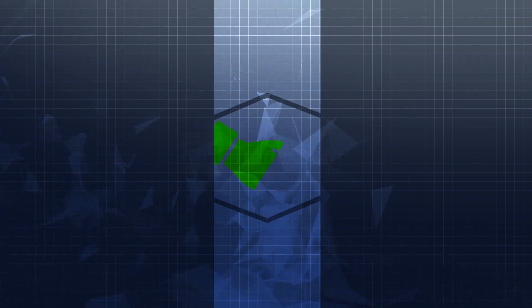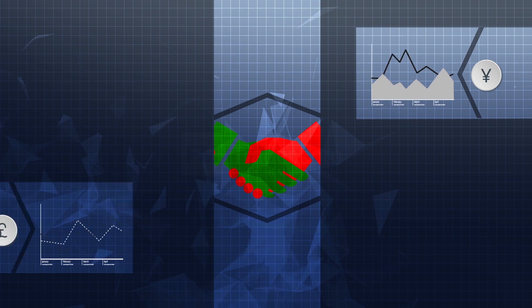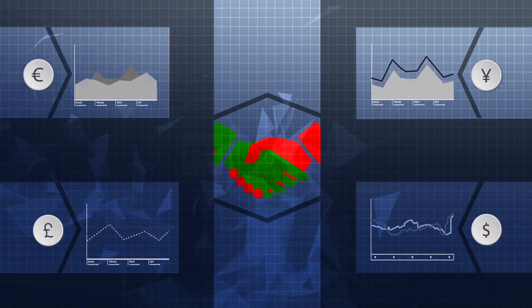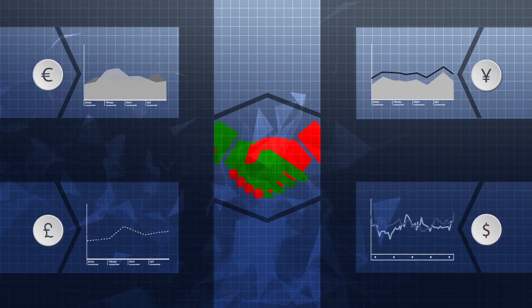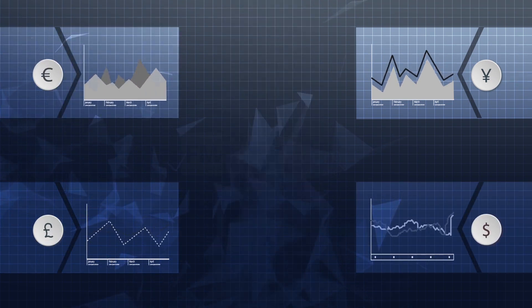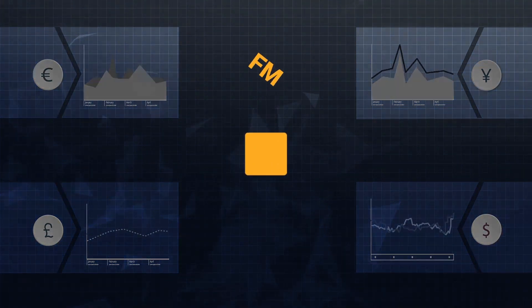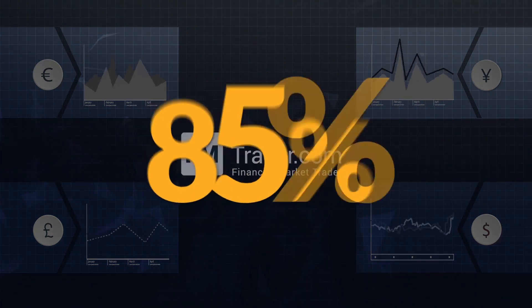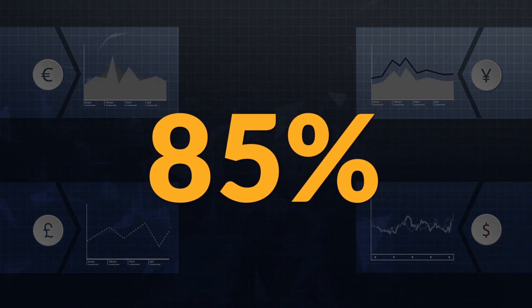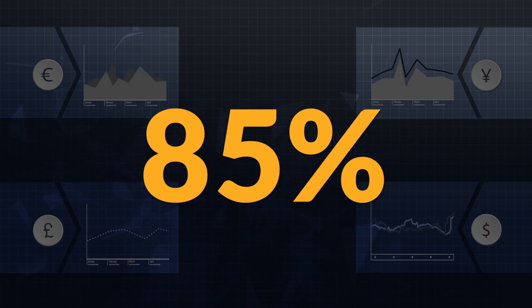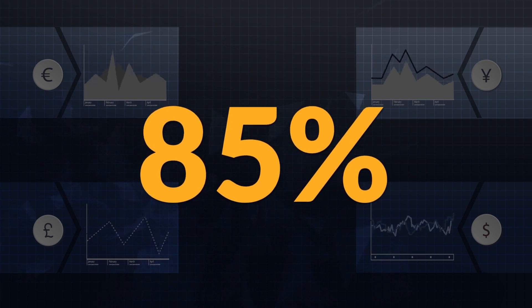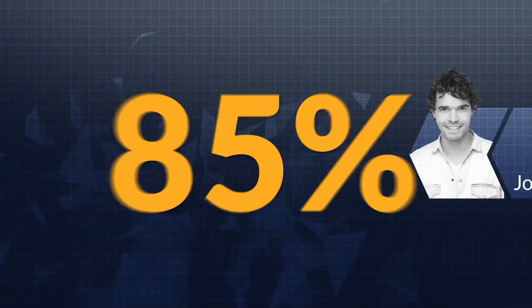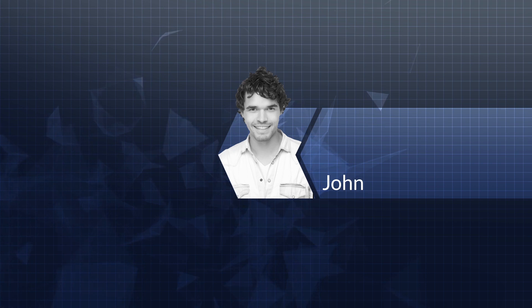FM Trader functions as a marketplace by selling options to traders who come from different fields and areas of interest. If you trade with FM Trader's platform, the yield ratio of foreign currency trading, such as euro to US dollar, stands at 85% in most cases.